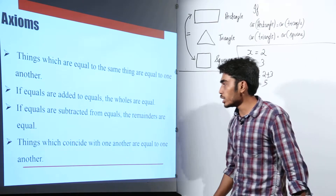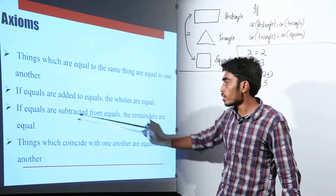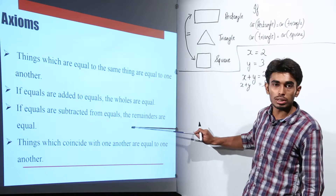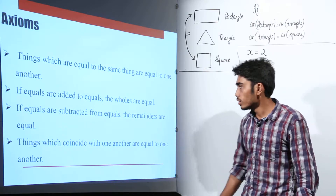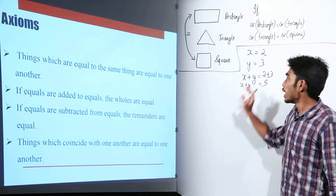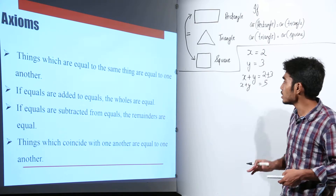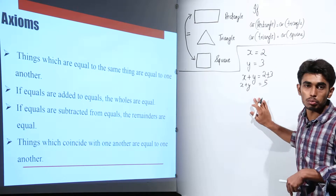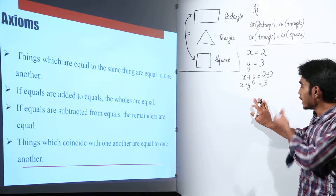The next axiom is very similar: if equals are subtracted from equals, the remainders are also equal.